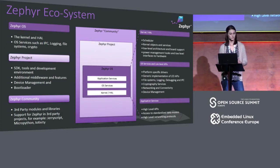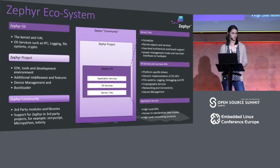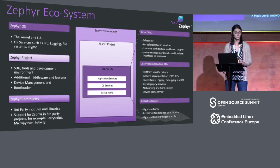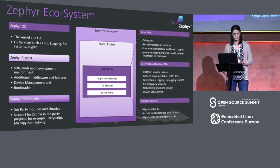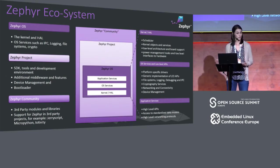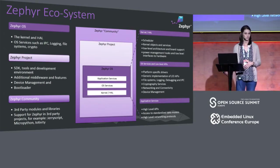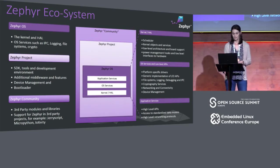Going from the OS to the project, we have a number of tools and host SDKs that we use to help make it easier for the developer to build Zephyr — things like cross compilers and additional features like that. And lastly, there's the Zephyr community — partner projects or things that are building on top of Zephyr, like Zephyr JS, MicroPython, IoTivity, and other projects that build on that framework.